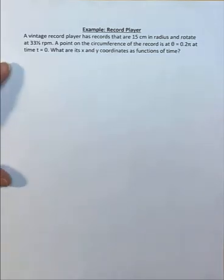This example looks at circular motion and its relation to simple harmonic motion. A vintage record player has records that are 15 centimeters in radius and rotate at 33 and one-third revolutions per minute. A point on the circumference of the record is at an angle of 0.2π at time t equals zero. What are its x and y coordinates as functions of time?